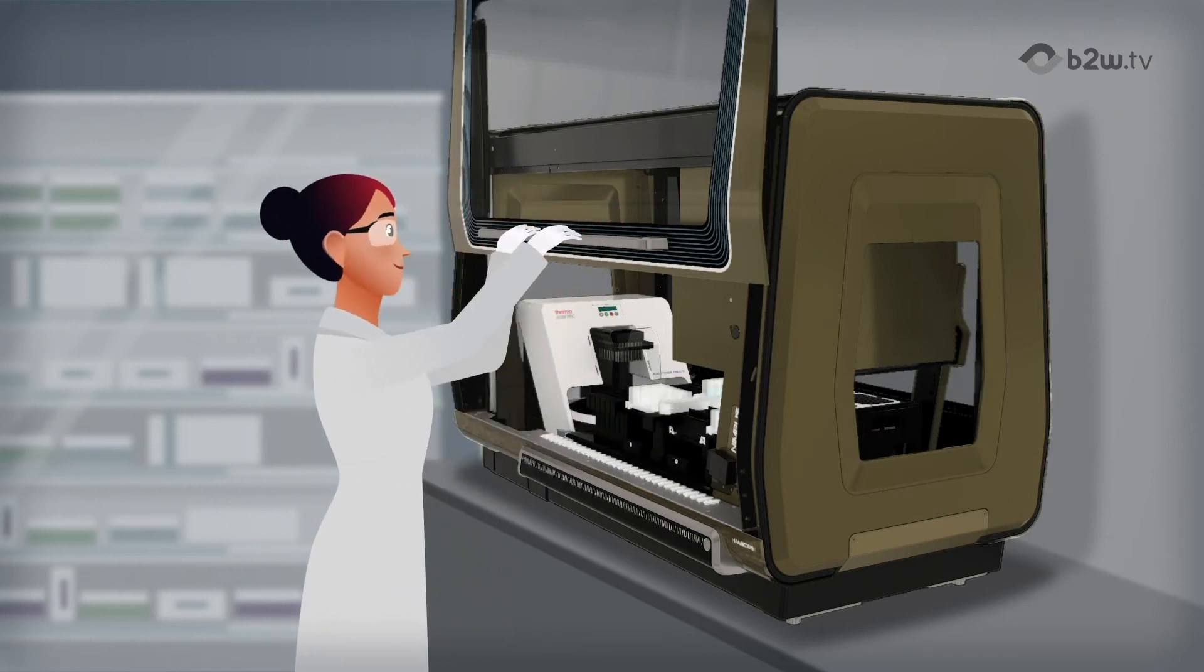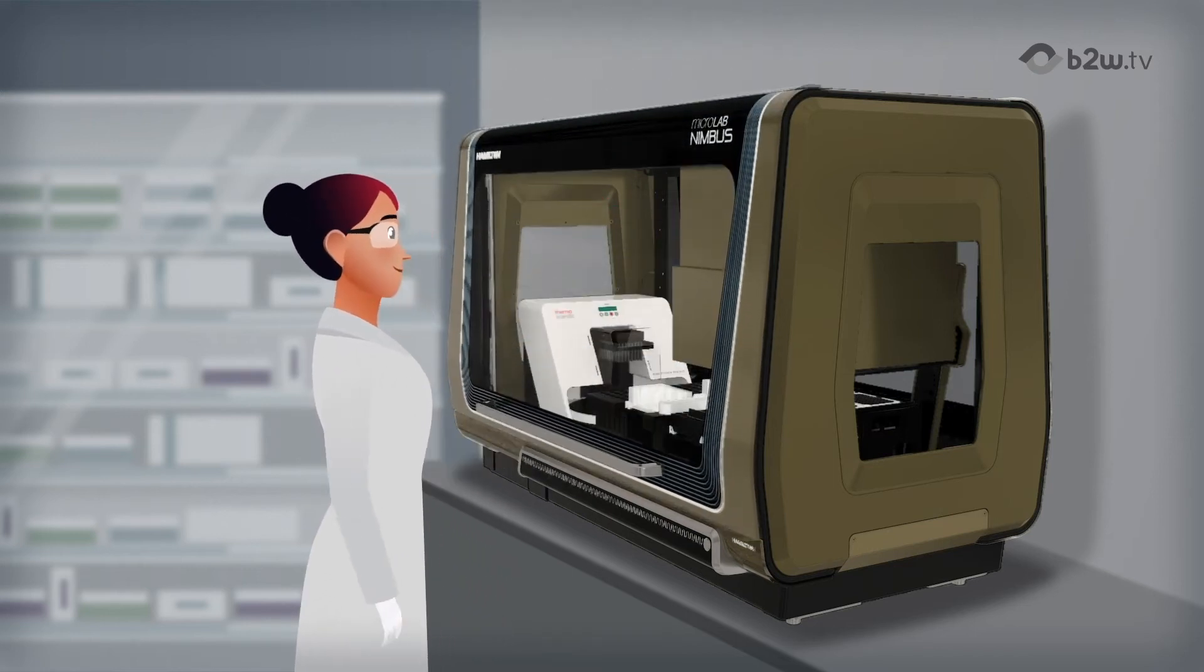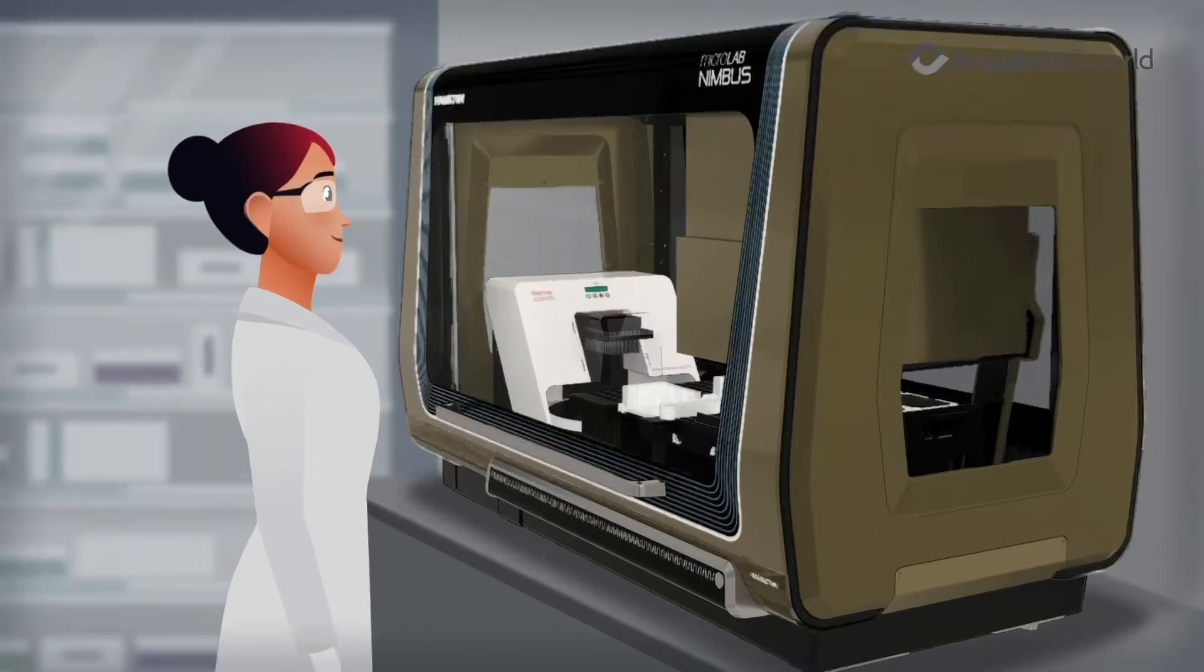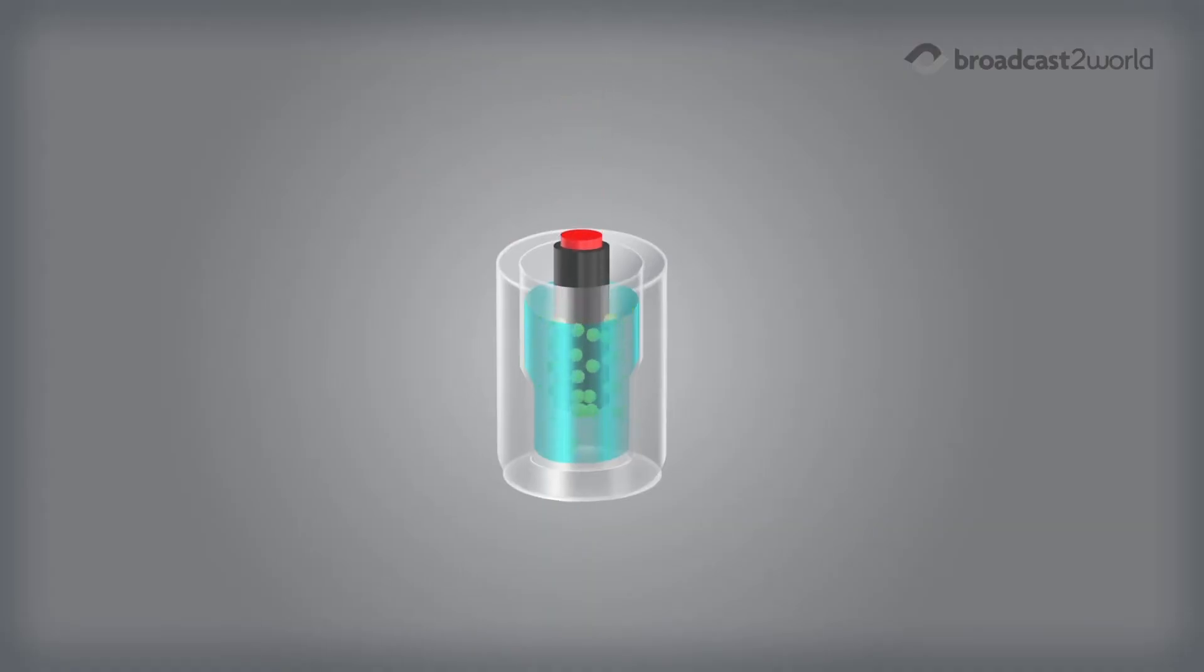Once the run starts, Prep Filer magnetic beads are added to the samples and bind to any DNA present. Cellular debris and inhibitors are then removed through particle movement purification.